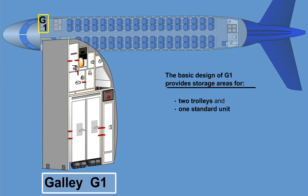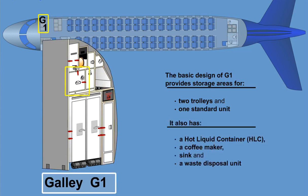The basic design of G1 provides storage area for two trolleys and one standard unit. It also has a hot liquid container, HLC, a coffee maker, sink, and a waste disposal unit.